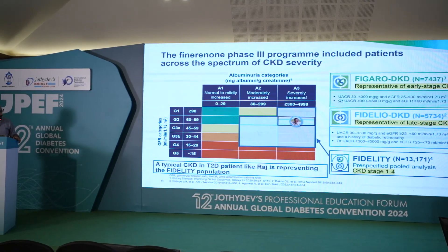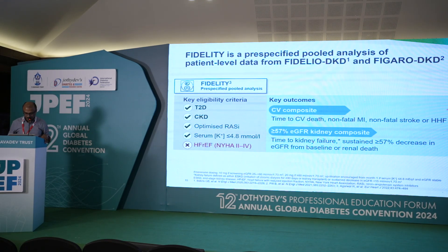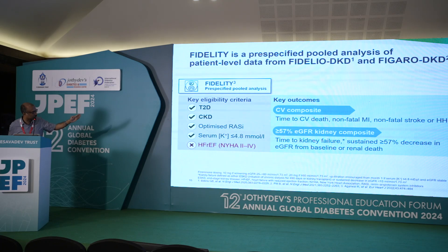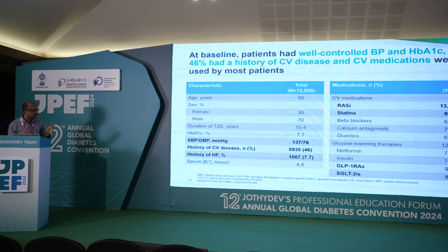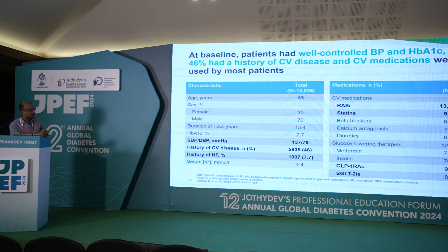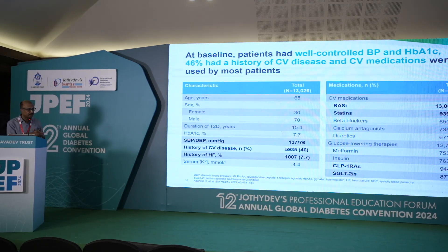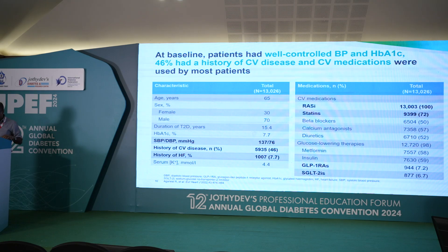Our patient fits into the high-risk area of the CKD heat map covered by these trials. The study population consisted of type 2 diabetes patients with CKD, already on RAS inhibitors, and with serum potassium less than 4.8 mEq/L. The average age was around 65 years, duration of diabetes approximately 15 years, with statins in 72% and RAS inhibitors in nearly 100%. Around 50% were on loop diuretics, indicating significant fluid retention and higher disease severity.